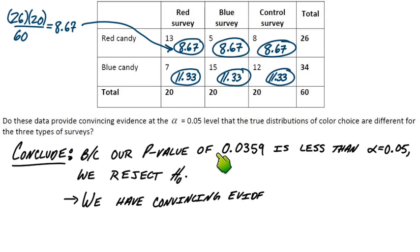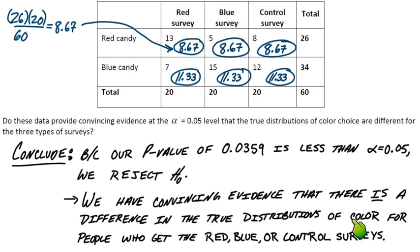And then finally, we just have to say what that means exactly in context. If we reject the null, that means we've got convincing evidence that there is a difference, and then now we have to add the context piece. There is a difference in the true distributions of color for people who get the red, the blue, or the control survey. So not only did those values look different, but we proved that that difference was statistically significant.